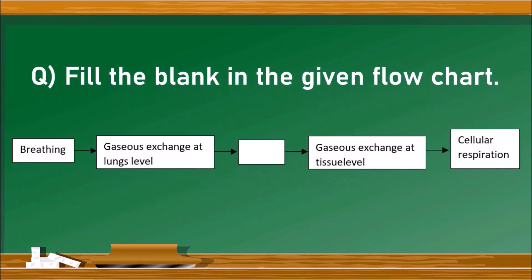Fill in the blank in the given flowchart. The flowchart shows: breathing → gaseous exchange at lungs level → blank → gaseous exchange at tissue level → cellular respiration. These are the events of respiration in human beings. After breathing and gaseous exchange at the lungs level, the gas absorbed into the blood must be transported, so the blank should be filled with 'gas transport by blood.'